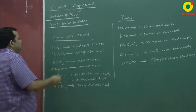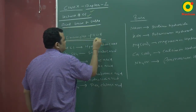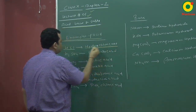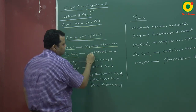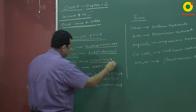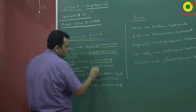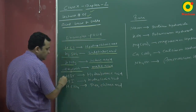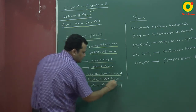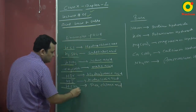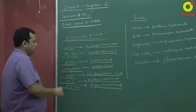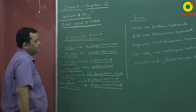Now let's look at examples of acids. HCl is called hydrochloric acid. H2SO4 is sulfuric acid. HNO3 is nitric acid. CH3COOH is acetic acid. HBr is hydrobromic acid. HI is hydroiodic acid. HClO4 is perchloric acid.